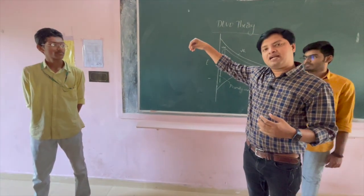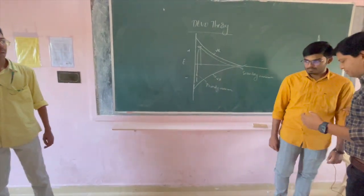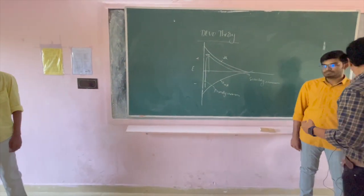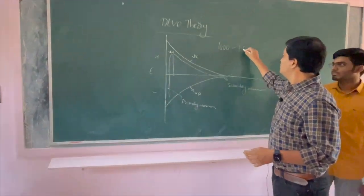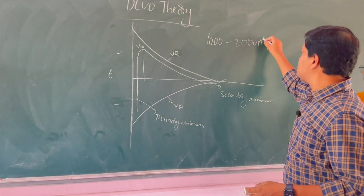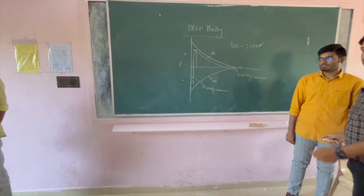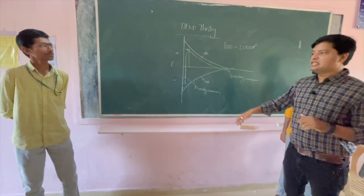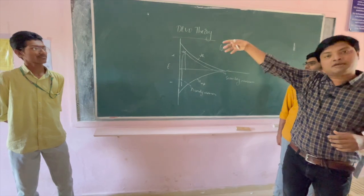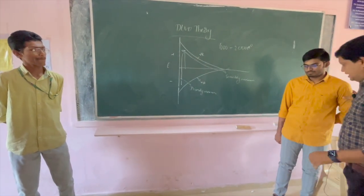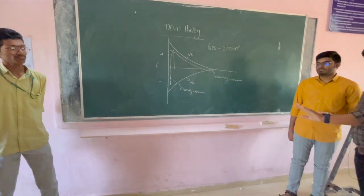Further adding electrolytes causes the particles to move away from each other. When they come to a distance of 1000 to 2000 Angstroms, now the distance between the colloids is 1000 to 2000 Angstroms. When I add even more electrolytes, they went apart from each other.